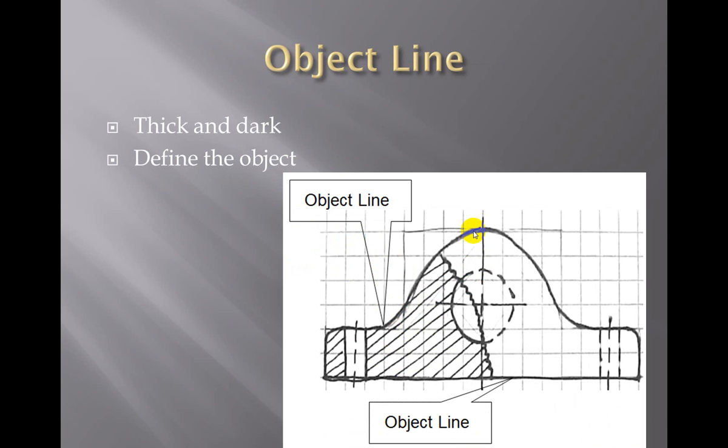Object lines are dark lines that actually outline the outside of the object. They define the shape of the object that you're trying to draw and they are very darkly drawn.